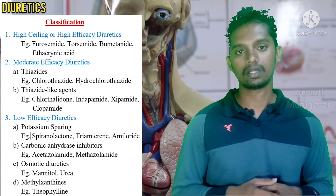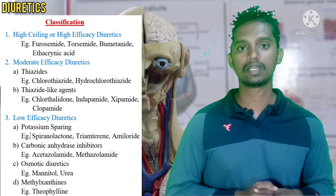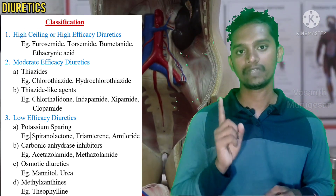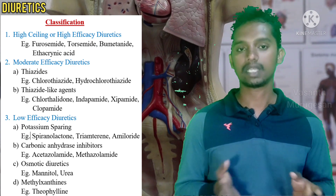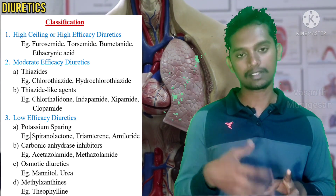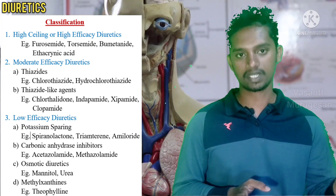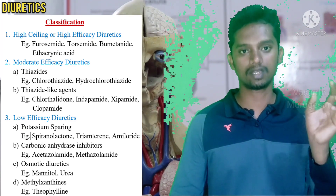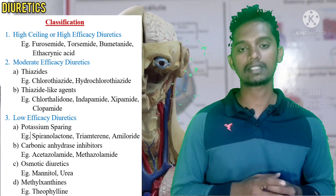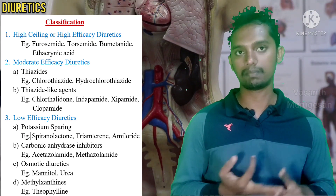The second major category is moderate efficacy diuretics, which has two subtopics. The first subtopic is thiazide diuretics — example drugs are chlorothiazide, hydrochlorothiazide, and polythiazide. A mnemonic here is that most drugs in this group have the suffix '-thiazide'. The second subtopic is thiazide-like diuretics — example drugs are chlorthalidone, indapamide, and xipamide.